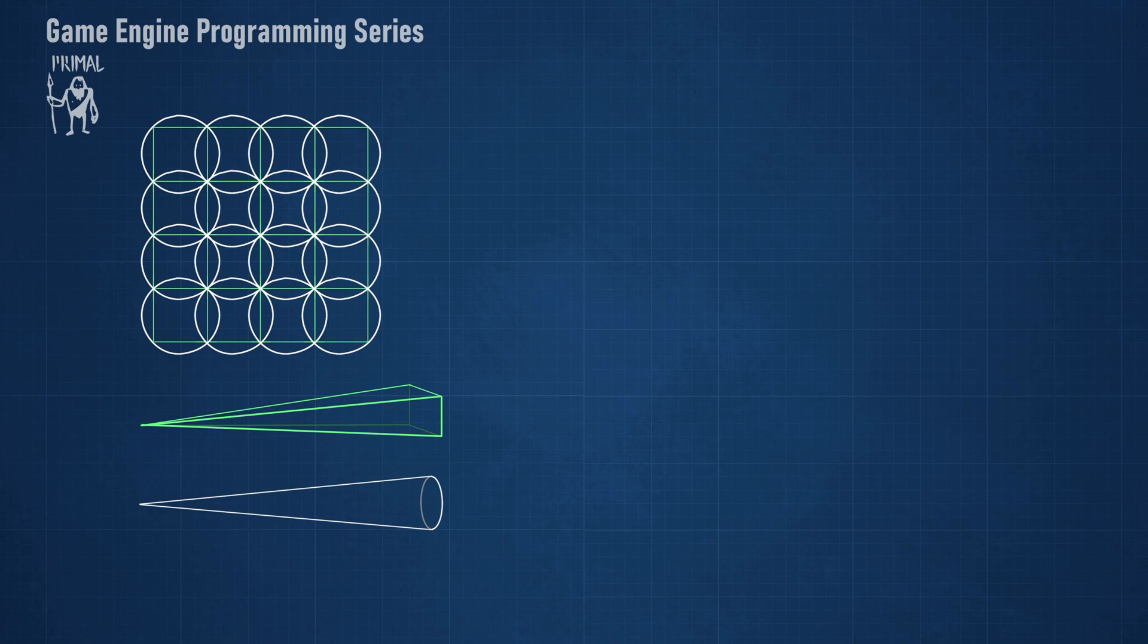Now we need to intersect the bounding spheres with these cones. Specifically with the truncated cone frustum with the same depth range as we calculated in the light culling shader. Wait, but how do we do that? Well, I couldn't find an exact method for sphere-cone intersection testing that is cheap enough to be practical.